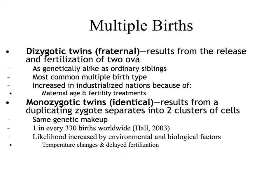The majority of the time, women give birth to one child at a time. In some cases, however, they have multiple births, and the most common of the multiple births would be twins. Now there are two types of twins: dizygotic, also known as fraternal twins, and monozygotic, also known as identical twins.